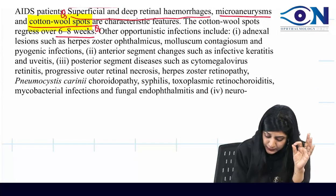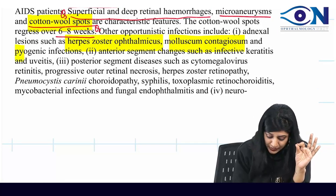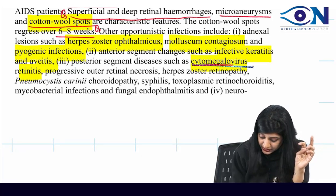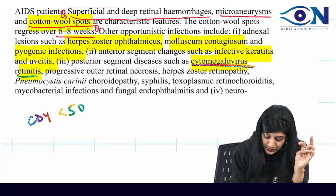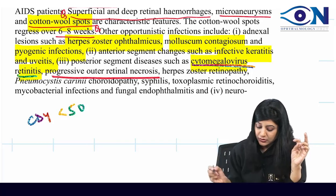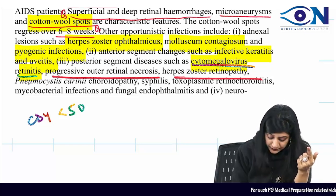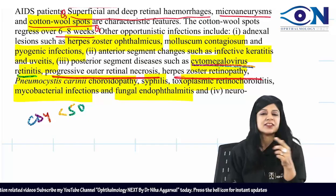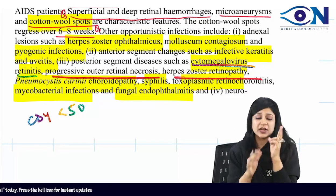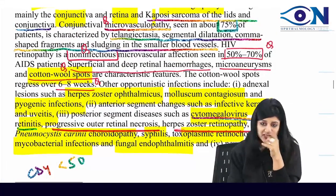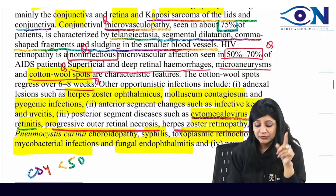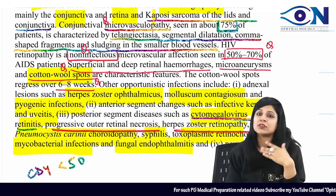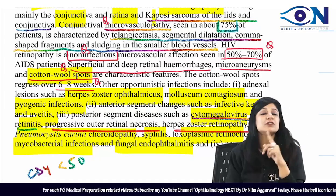Other ocular features in HIV include herpes zoster ophthalmicus, molluscum contagiosum, pyogenic infections, infective keratitis, uveitis. CMV retinitis is very important — it occurs when CD4 count is less than 50. Progressive outer retinal necrosis and herpes zoster retinopathy, pneumocystis carinii choroidopathy, syphilis, toxoplasmic retinochoroiditis, mycobacterial infections, and fungal endophthalmitis can also occur. The most common manifestations are conjunctival microvasculopathy and retinal CMV retinitis with cotton wool spots.